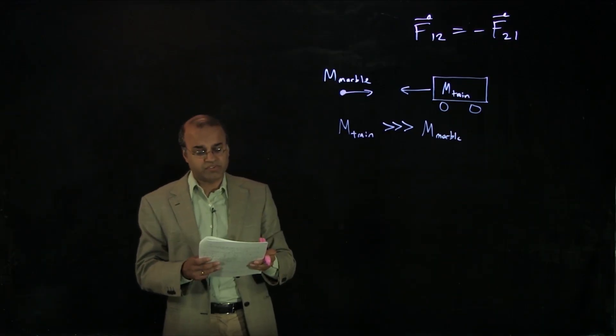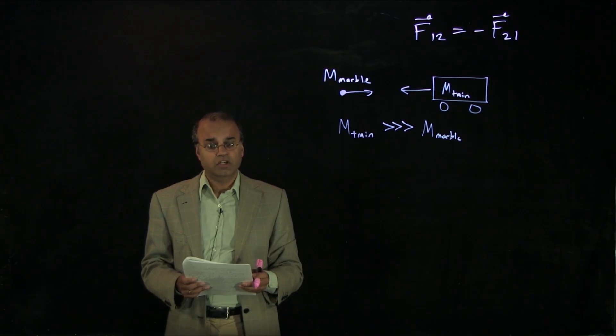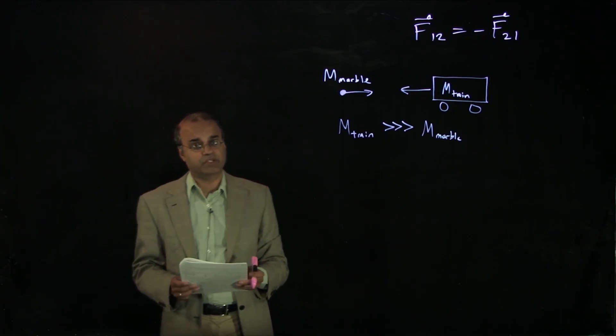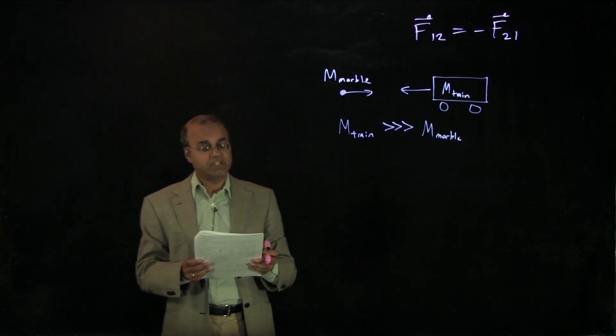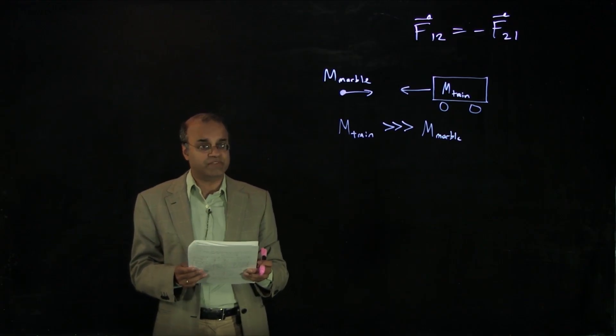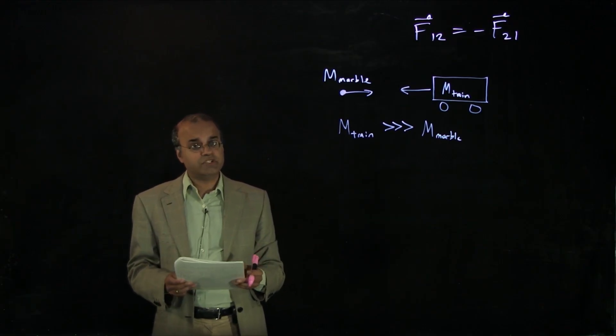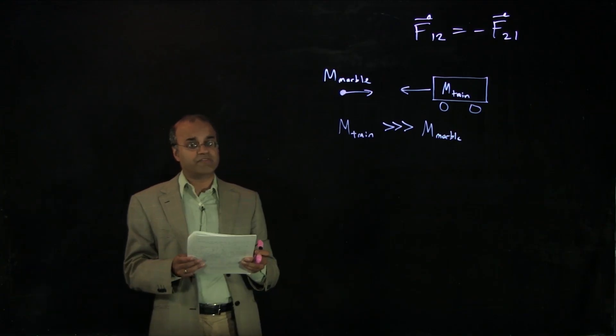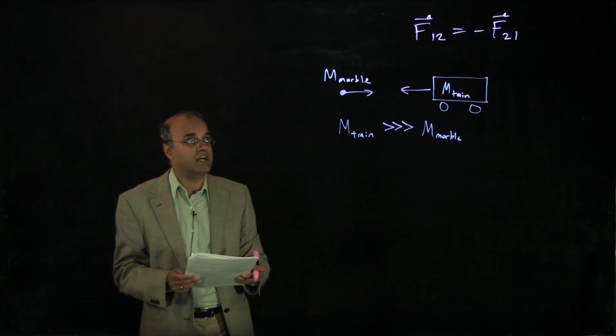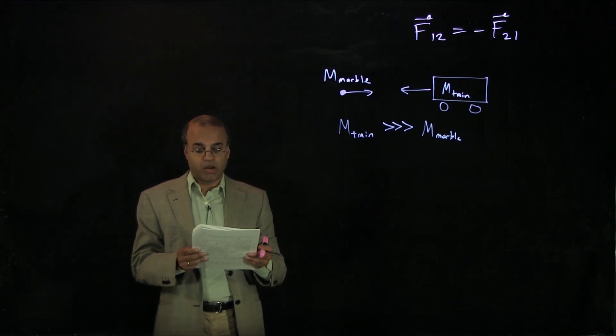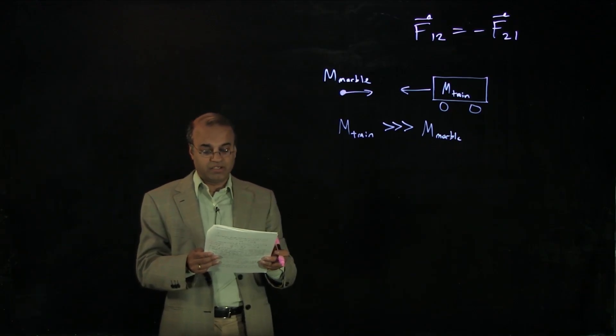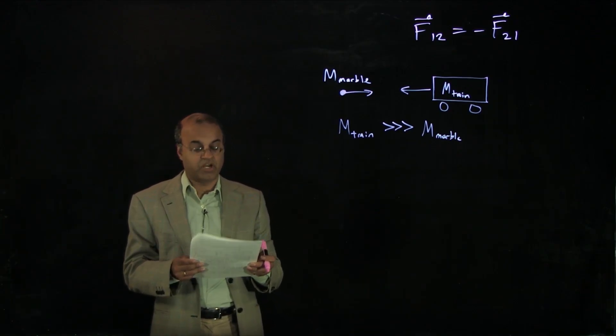The question I want to consider is, at the instant that these two objects collide, which experiences the greater force? In terms of outcomes, clearly the marble will be smashed by the train, whereas the train will not be noticeably affected by the marble. So your intuition might suggest that it's the marble that feels the greater force. But that's incorrect, because Newton's third law tells us that forces come in equal and opposite pairs. What that tells us is that each object will exert an equal but oppositely directed force on the other.